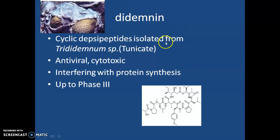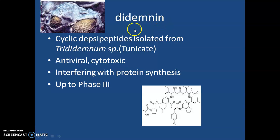The next drug is obtained from a marine invertebrate called a tunicate, belonging to the subphylum Tunicata. The compound is called didemnin. Didemnin is a cyclic depsipeptide, meaning it is a peptide chain in which some amino groups are replaced by ester groups. This cyclic depsipeptide is isolated from the Trididemnum species.